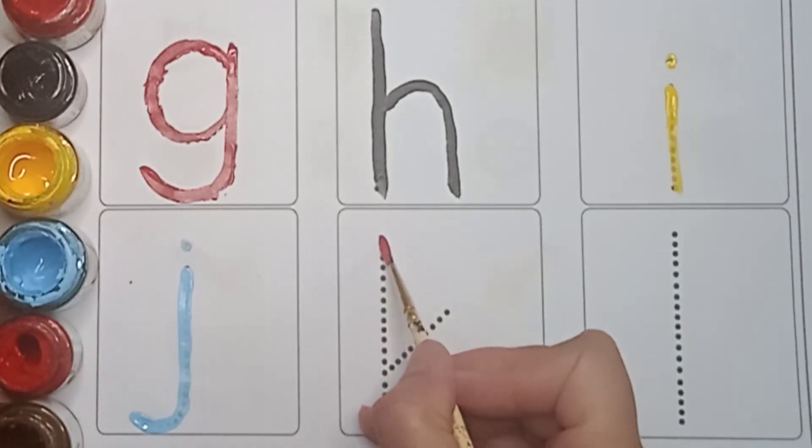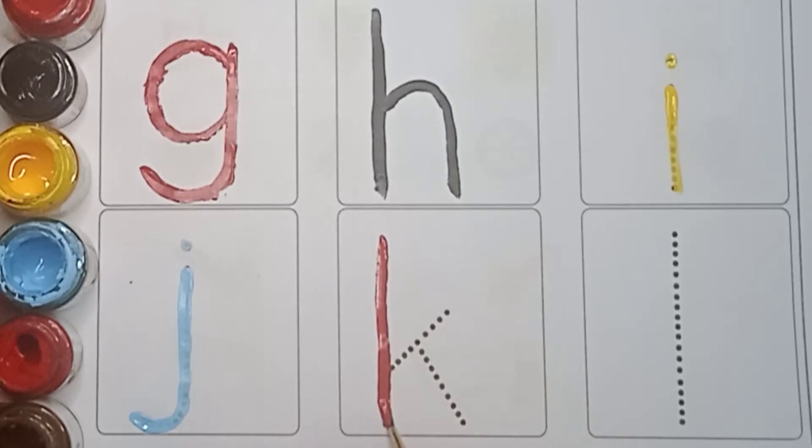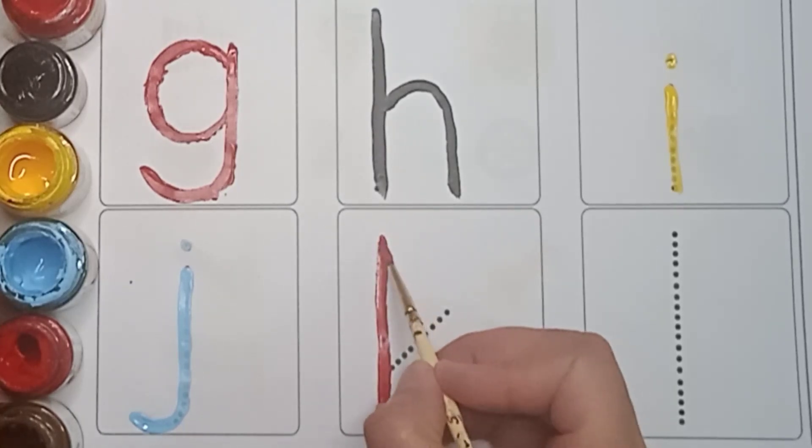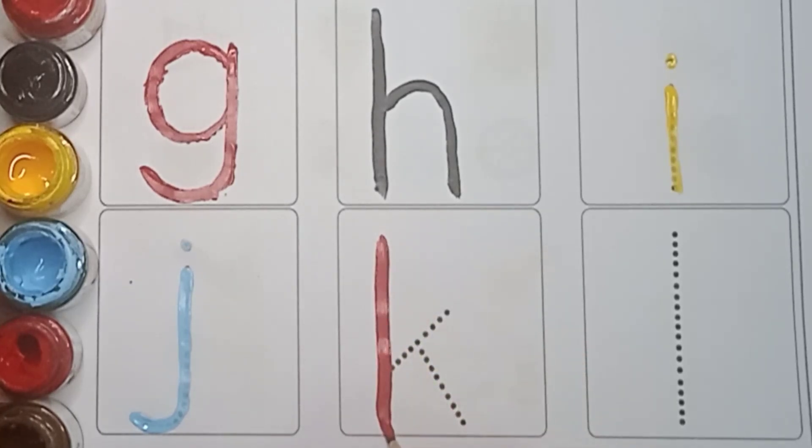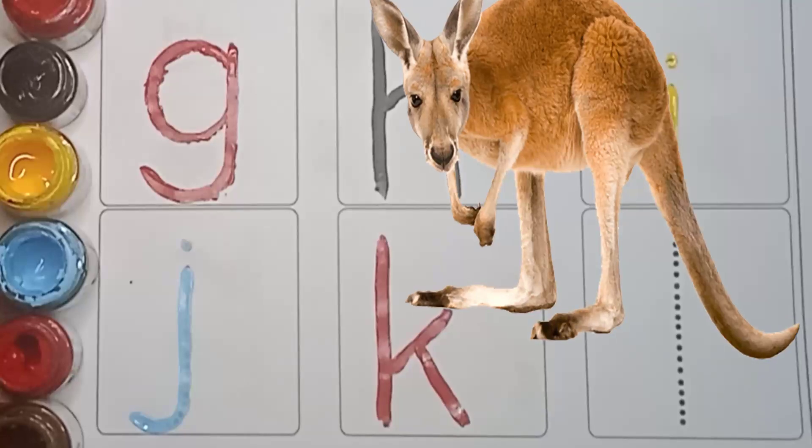Again red color. First make a standing line here. Like this. And one slanting line. Like this. And one more slanting line here. Like this. It's K. K is for Kangaroo.